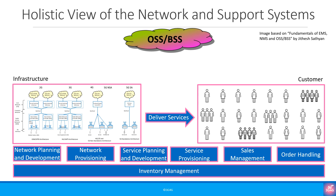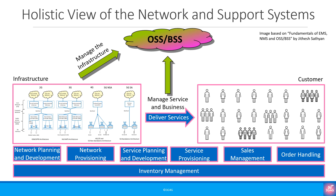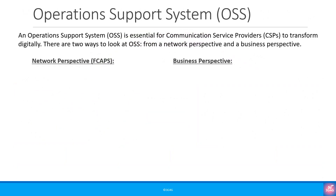Bringing OSS-BSS into the equation again, at a very high level, the job of the OSS is to manage the infrastructure and to manage the service and business. On the other hand, the job of the BSS is simply to manage the customer. In summary, OSS is essential for communication service providers or CSPs to enable digital transformation. As shown, there are two ways to look at OSS: from a network perspective and a business perspective.